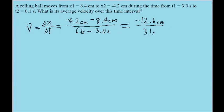Then, if you want, you can put it into your calculator, and you'll find an average velocity of negative 4.1 centimeters per second. And that is our answer.